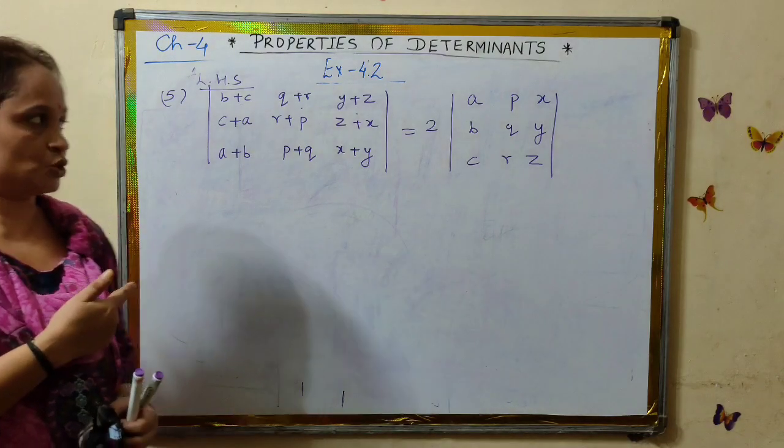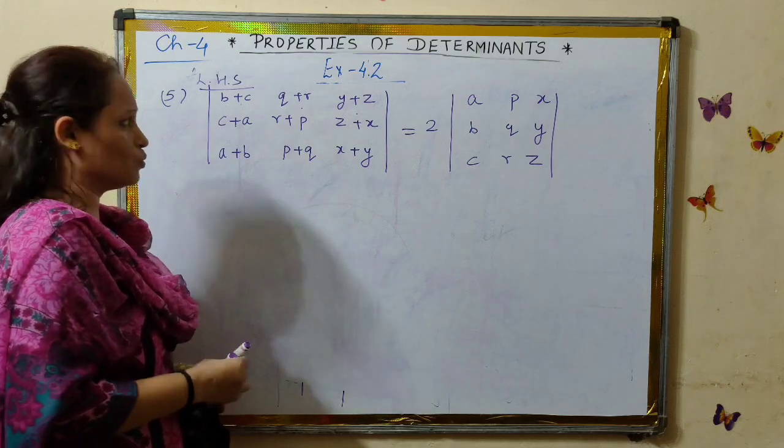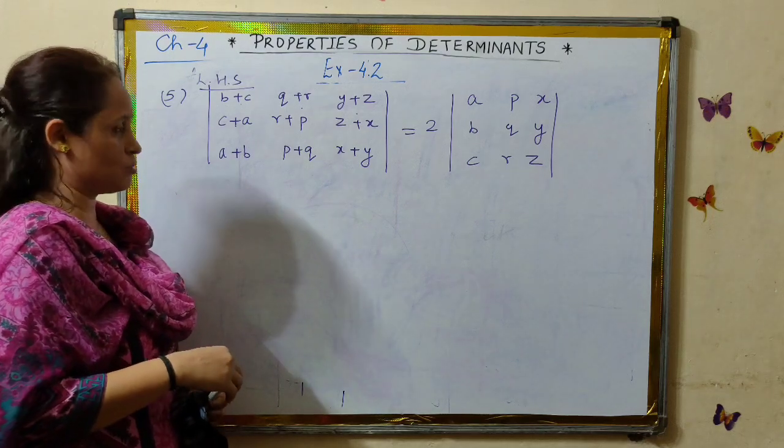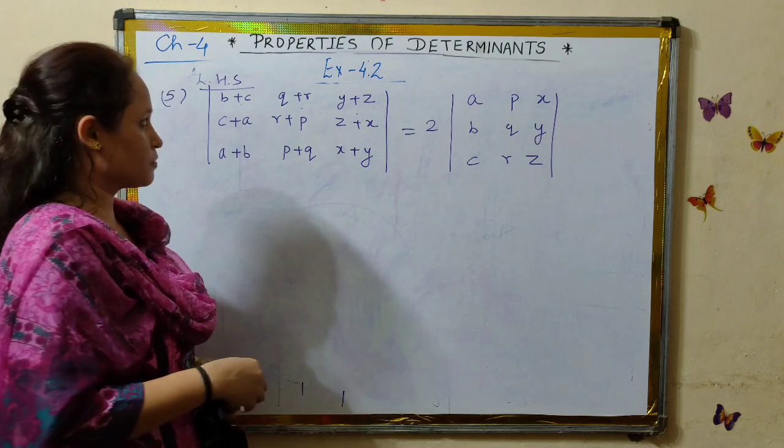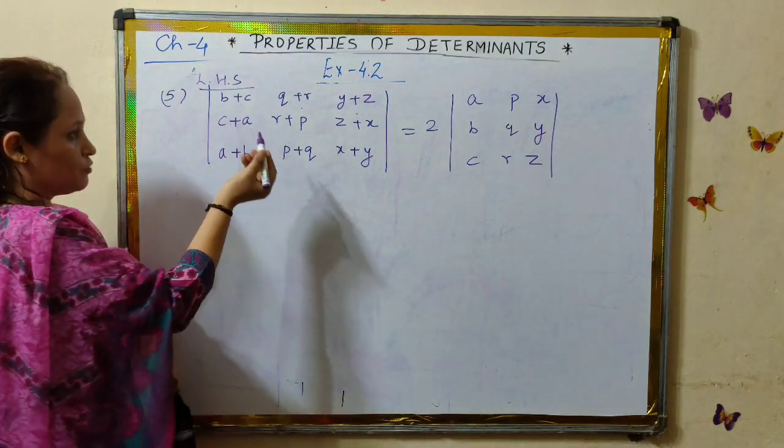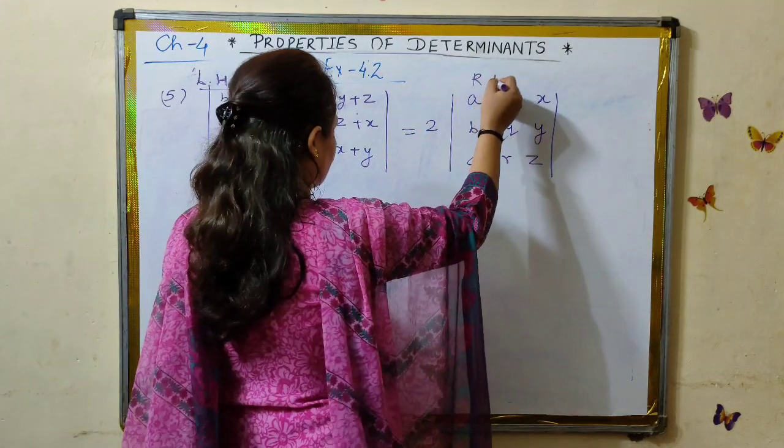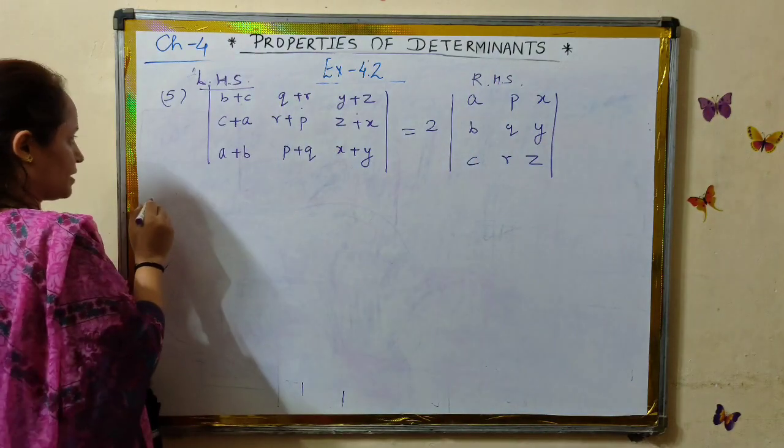Alright, so let's start with this question, fifth question of 4.2. We do the same thing that we did in question number 1 to 4 without expanding and using properties of determinants. So we don't have to expand the left hand side before we do the right hand side. We begin with the left hand side.